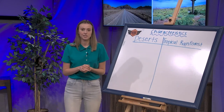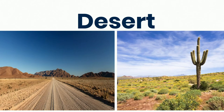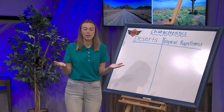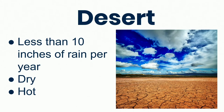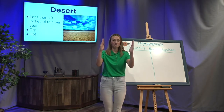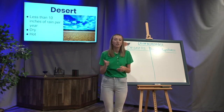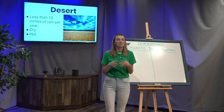The first biome we're focusing on is deserts. Looking at pictures of deserts — does it look like there's a lot of rain? No, there's not. Here are some characteristics of deserts: first, it does not rain a lot — less than 10 inches of rain per year. Think about 10 inches on the ground over a whole year. Second, it's very, very dry in a desert. Because there's not a lot of rain, the ground is very dry, there's probably a lot of dirt, and it's not humid. Humid is when there's a lot of water in the air, but a desert does not have that.